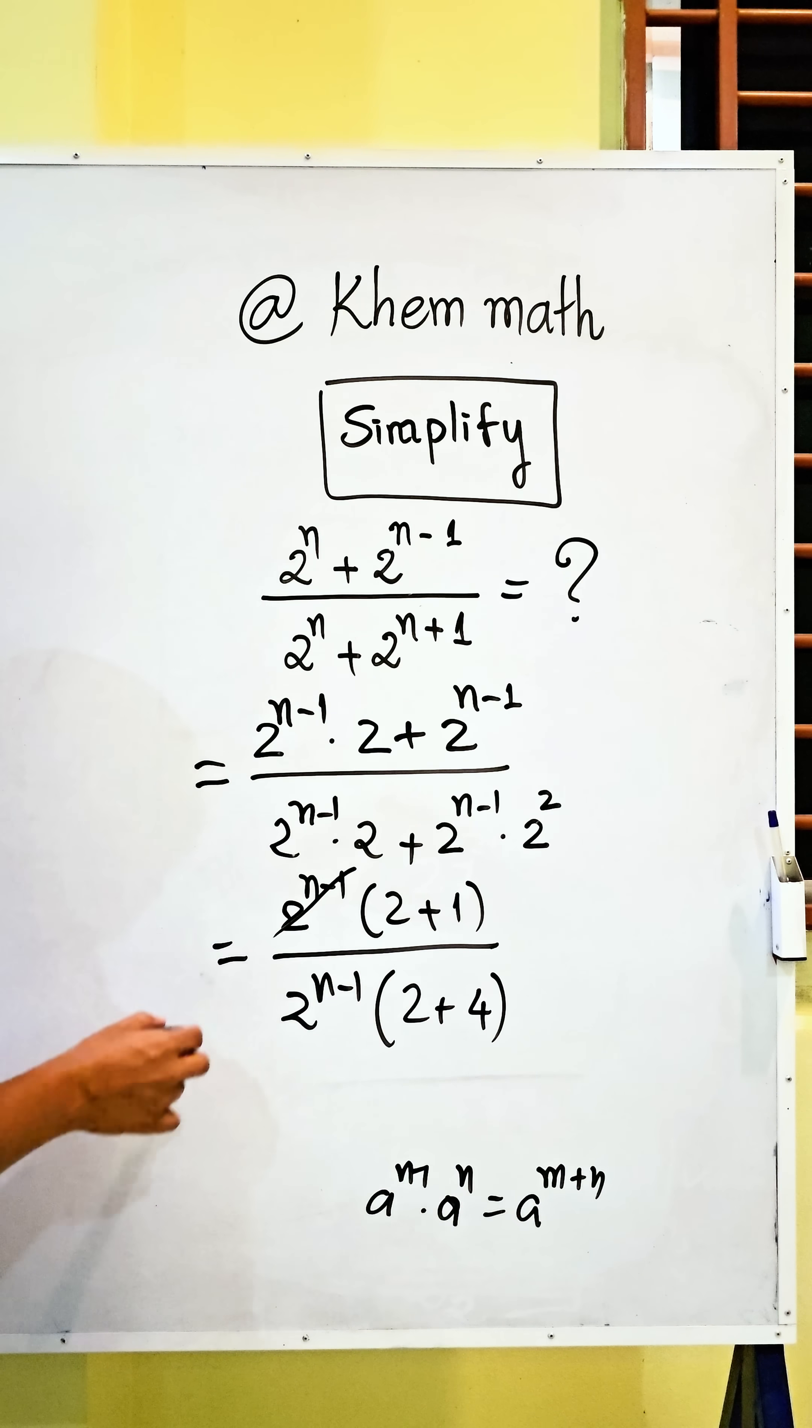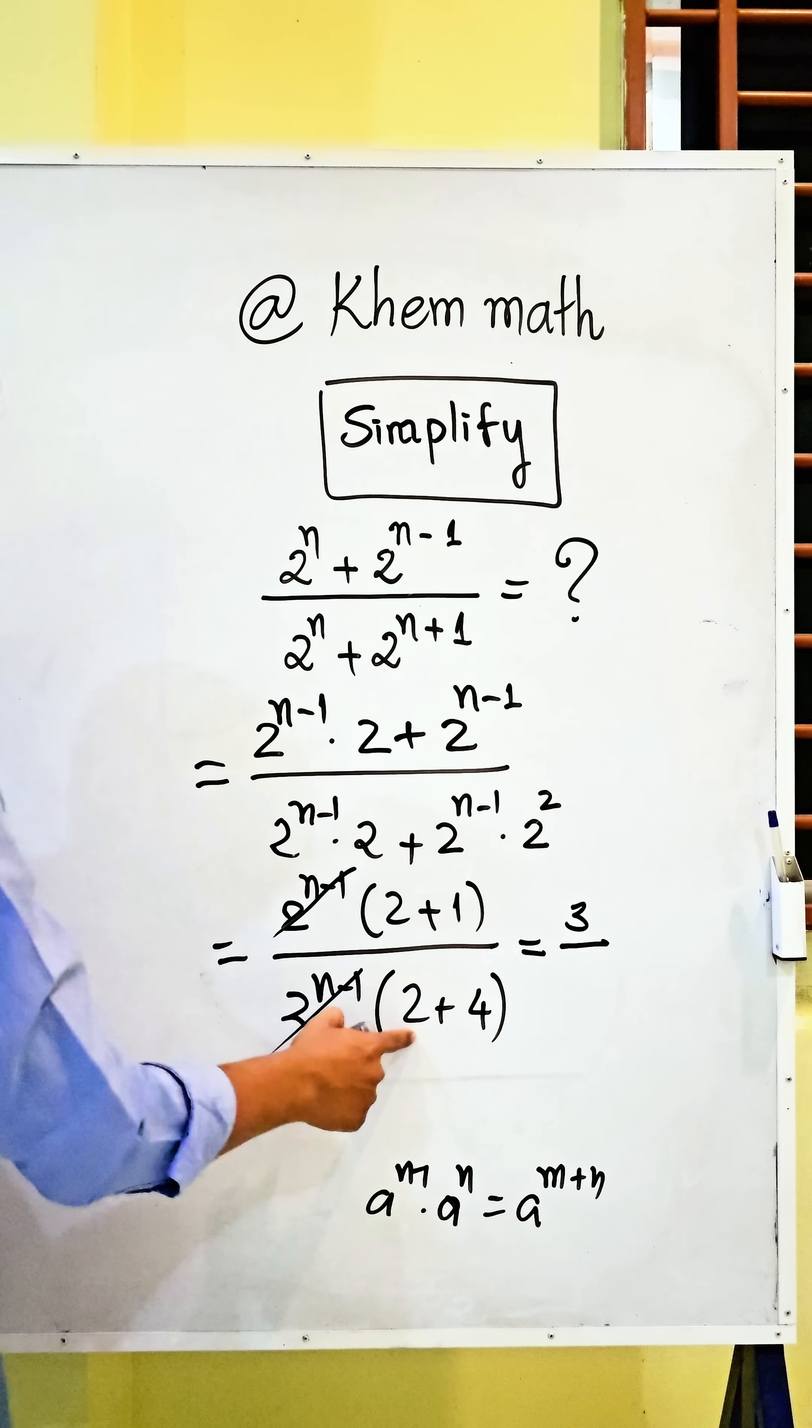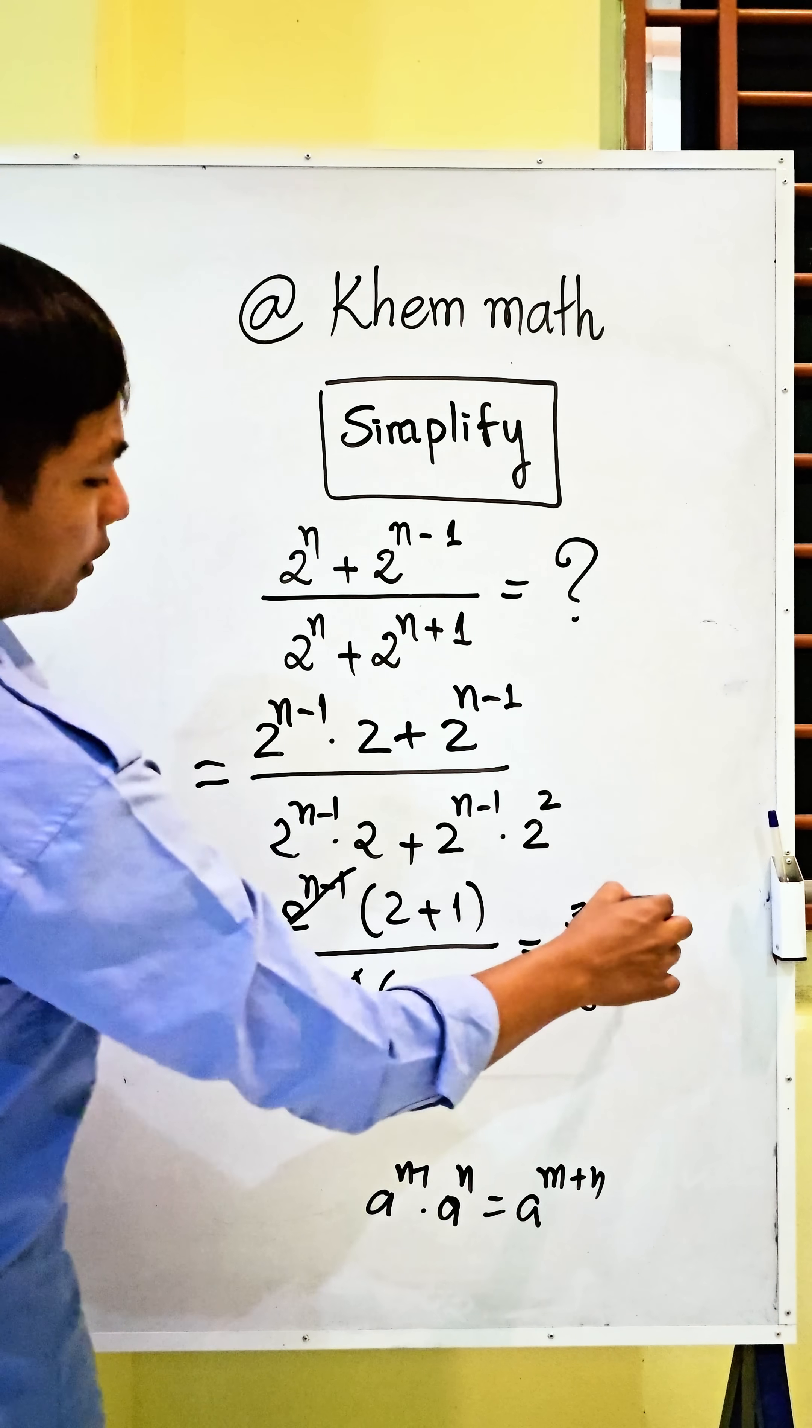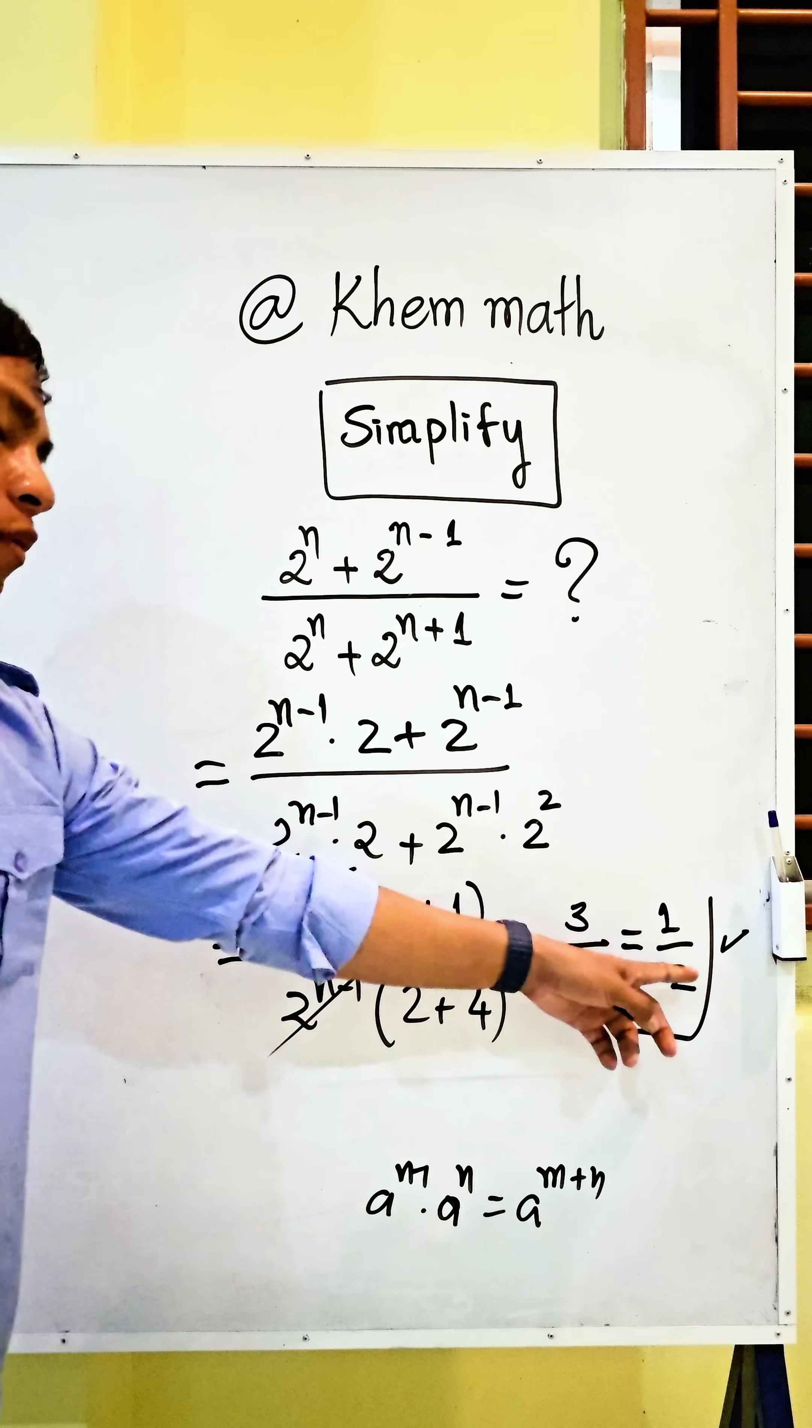We simplify 2 power n minus 1. We get this equal to 2 plus 1 equal to 3, and 2 plus 4 equal to 6. And 6 divided by 3 is equal to 2. So our expression is equal to 3 divided by 6, equal to 1 divided by 2.